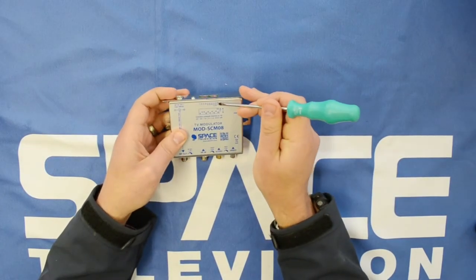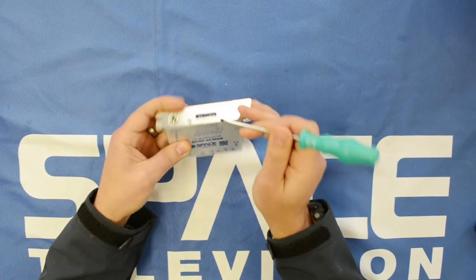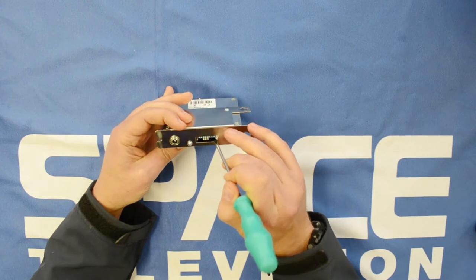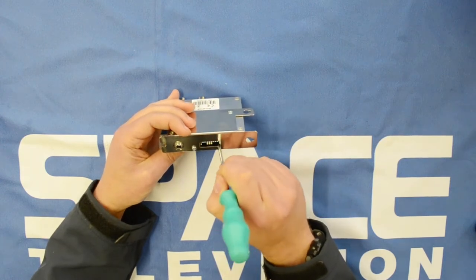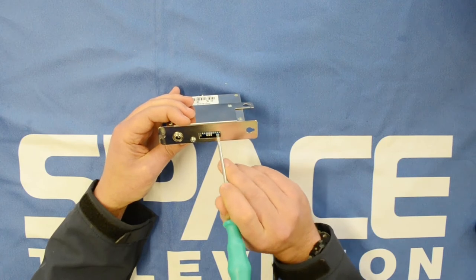You'll notice that the first dip switch here is for BG slash I. Now in South Africa we use I, but if you're in an African country you have to flip it over to BG. So you just drop that dip switch down there, that first one, number one.